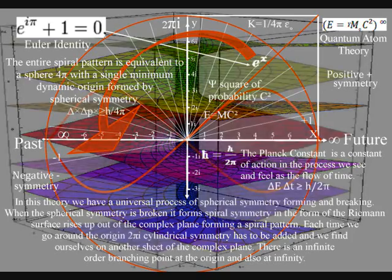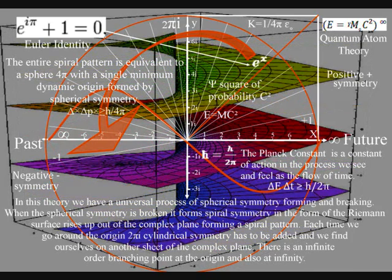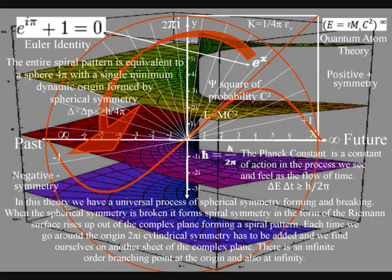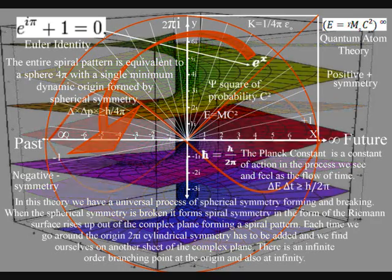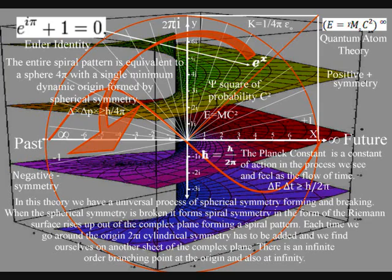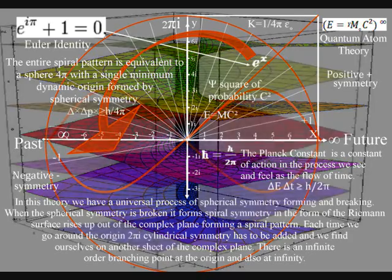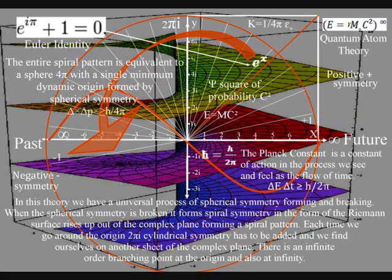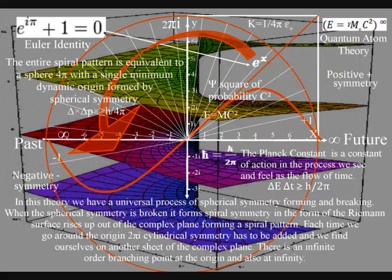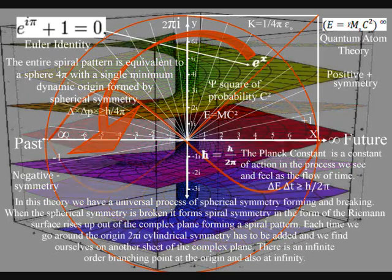Also, in mathematics, the imaginary number i is the square root of minus one. There is no objective understanding to this — you could say that this is just the way mathematics is. But in this theory, the imaginary number i is the square root of minus one because it is part of a physical process linked to the square of probability.